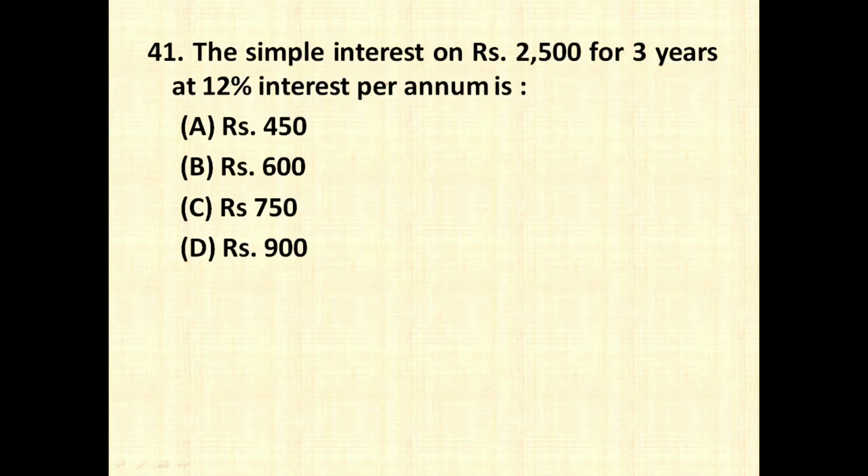The simple interest on rupees 2500 for 3 years at 12% interest per annum is 450, 600, 750, 900. So let us see the formula for simple interest, which is PTR divided by 100, where P stands for principal amount.